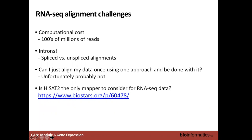From next-generation sequencing data you can have millions of reads that need to be placed on the genome, considering that reads are likely to come from exons with introns in between — so you want a splice-aware aligner. If you've never done this before, you can run the aligner once, but you'll probably need to adjust parameters, evaluate the quality of your alignment, and repeat a few times before you're satisfied.